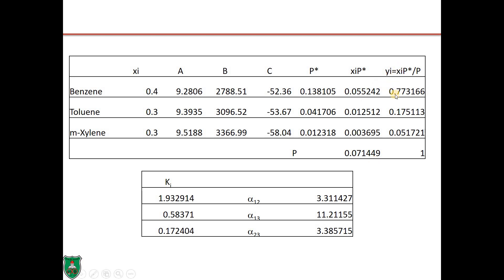To obtain the mole fractions in the vapor phase, we divide each Xi·Pi product by the total pressure P: y_benzene = 0.773, y_toluene = 0.175, y_xylene = 0.05. As an error check, the sum of all Yi values must equal 1. If the summation does not equal 1, a mathematical, logical, or semantic mistake has been made.